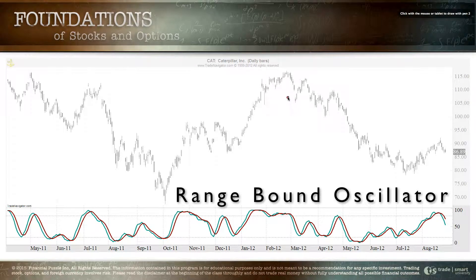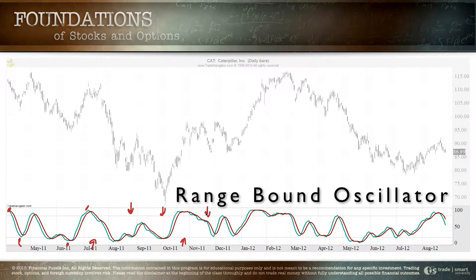Let's look at an example — this is the stochastics indicator. Notice we cannot get higher than 100 and we can't get lower than zero. You also notice the dotted lines representing the typical overbought and oversold range. When the reading is over 80 approaching 100, it's not long before the trade turns back down. When you're below 20 at the bottom, it turns back up. That tension builds so strong it slings back in the other direction — that's why we trade them.